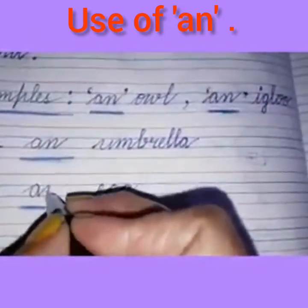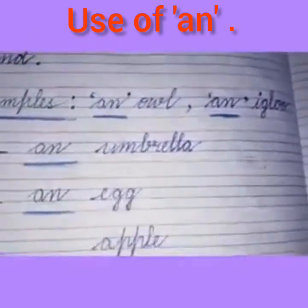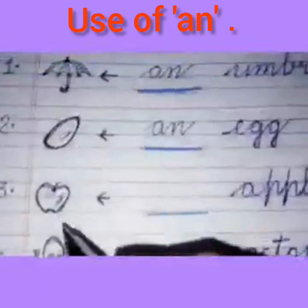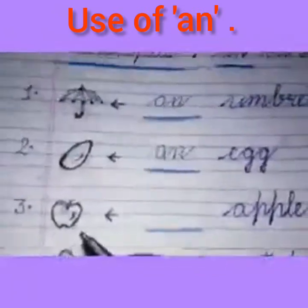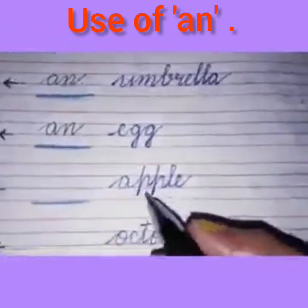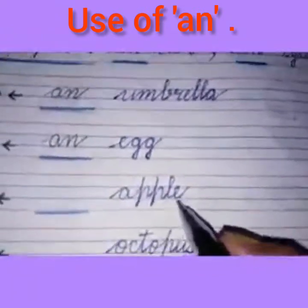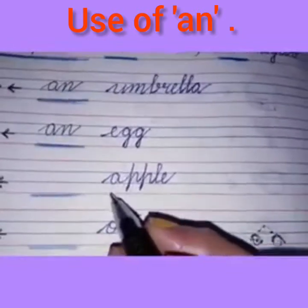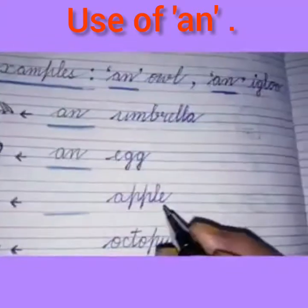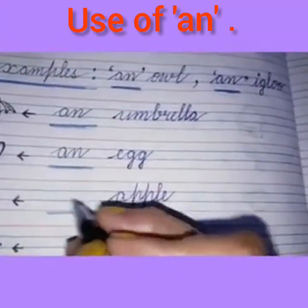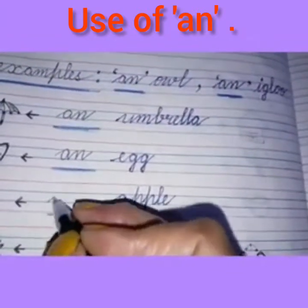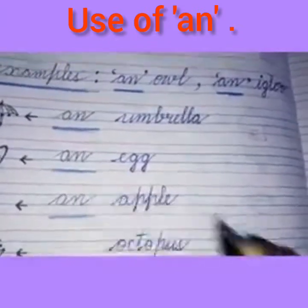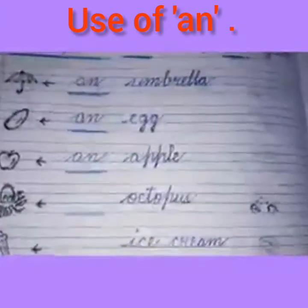See the next picture: an apple. A-P-P-L-E, apple. A is a vowel, so children, what will we write here? We will write 'an' before apple: an apple.